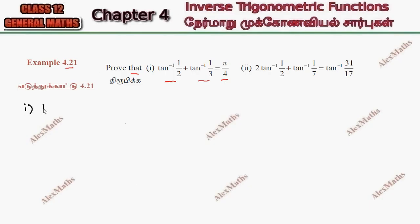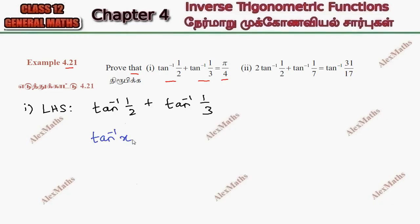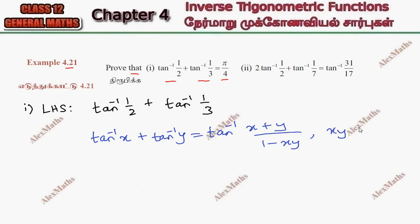So we will get LHS. LHS: tan inverse 1 by 2 plus tan inverse 1 by 3. Here we apply the formula: tan inverse x plus tan inverse y equals tan inverse of (x plus y) by (1 minus xy). This formula applies under the condition that the product xy is less than 1.